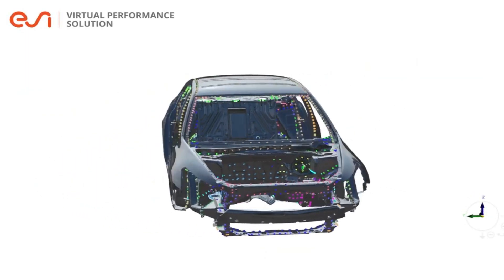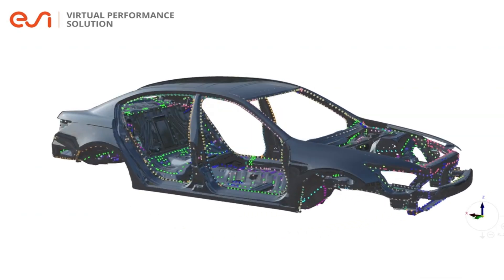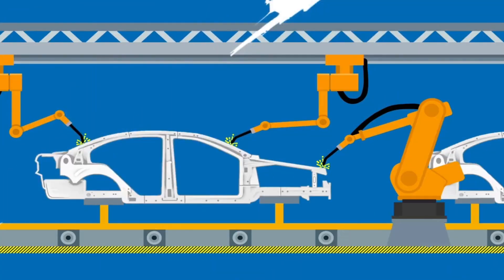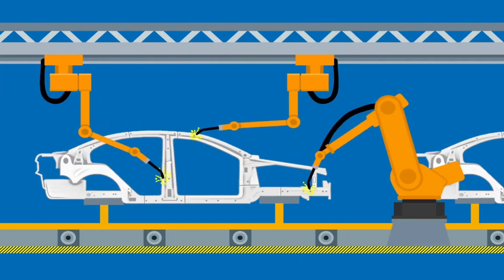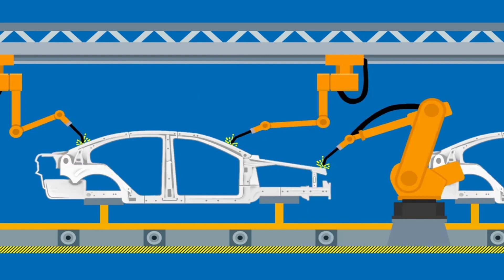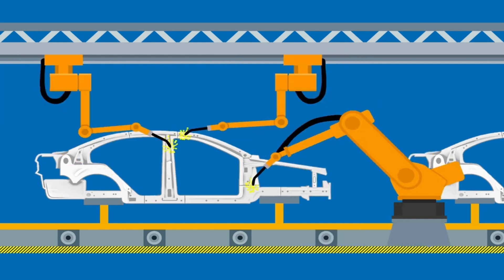Today's body in white structures are assembled using thousands of spot welds. Each of these is a potential failure point during a crash. Yet with use, the welding robot's electrode ages. So ESI's solutions help car manufacturers determine the welding process parameters to compensate electrode wear and ensure spot weld quality.